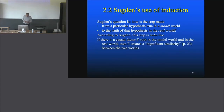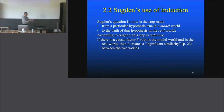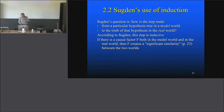The step is inductive. And the significant similarity that Saxton wants to identify in order to justify this inductive step is: there is a causal factor F both in the model world and in the real world, and F creates the significant similarity between the two worlds. What is fundamental here is we have the same causal factor both in the models and in the real world — like pieces of metal that are all copper — and that creates a significant similarity that enables an inductive inference.